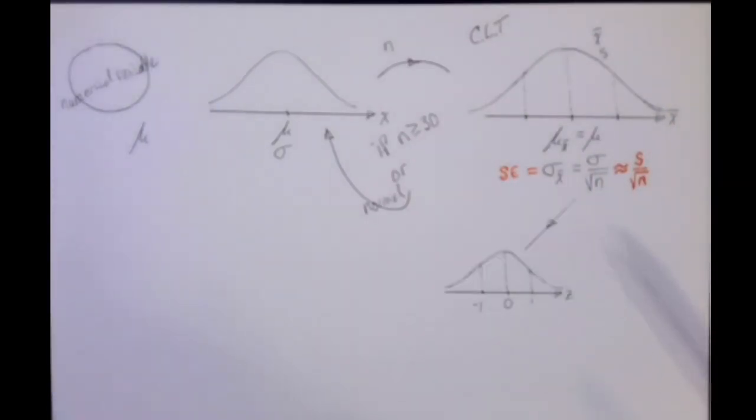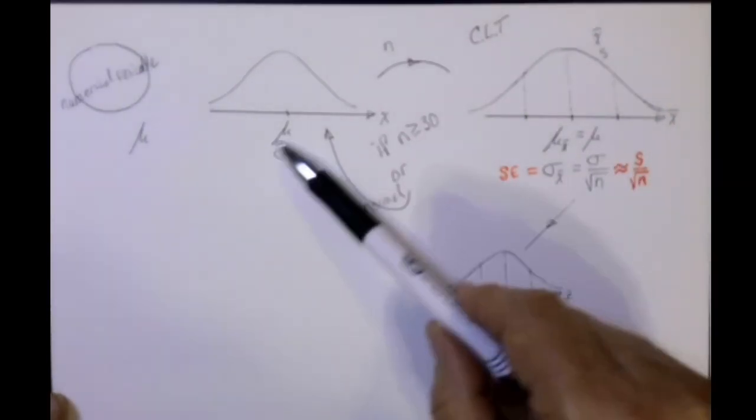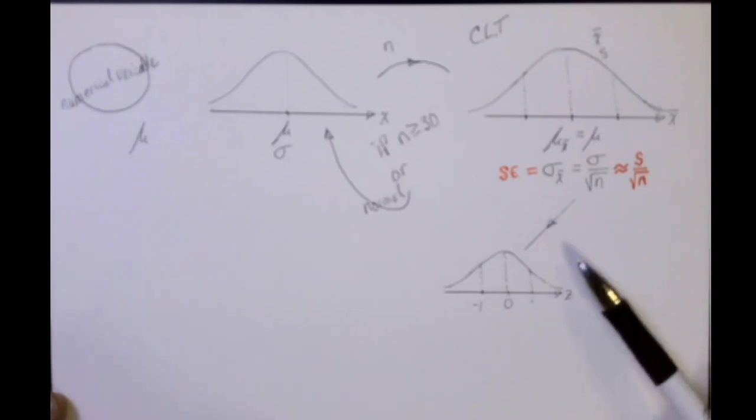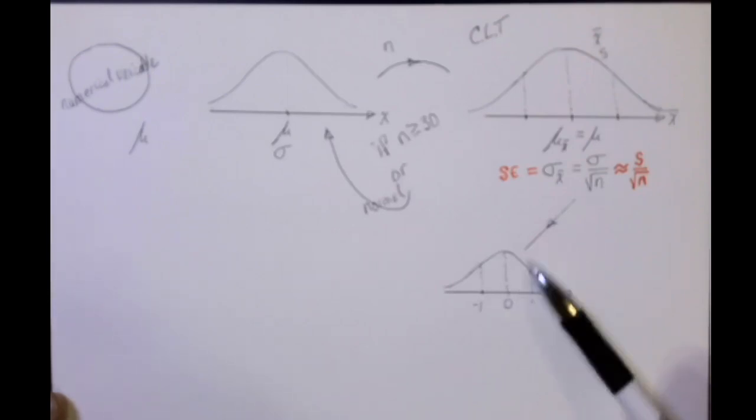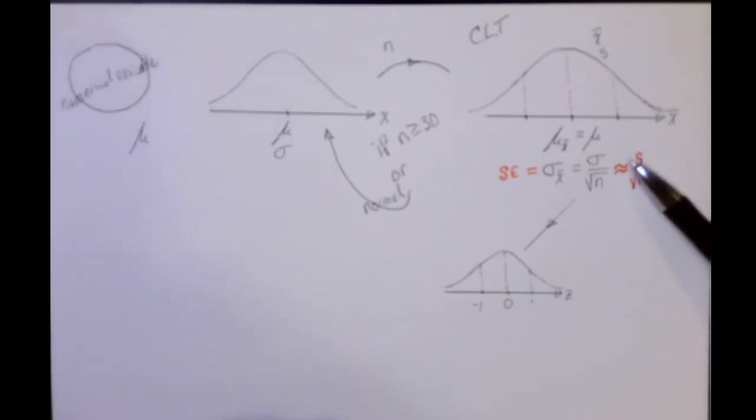In the unusual cases where we might actually know what the original population standard deviation is, then we can use a Z distribution as the normalized distribution. On the other hand, if we had to make this approximation, which is almost always, we'll need to use a T distribution.